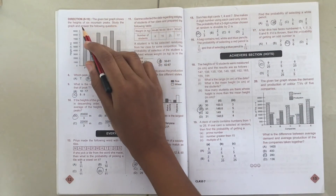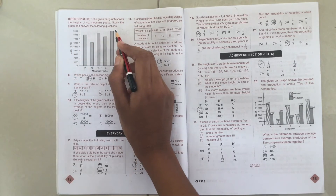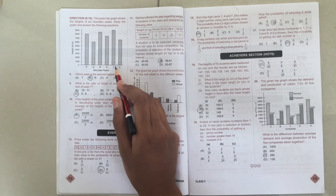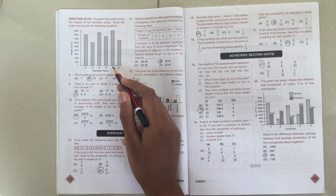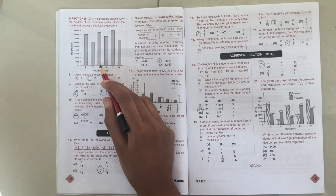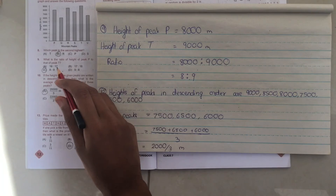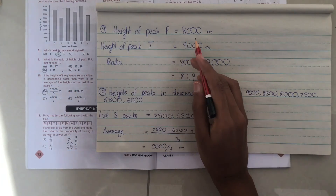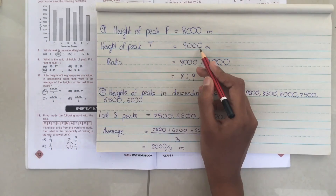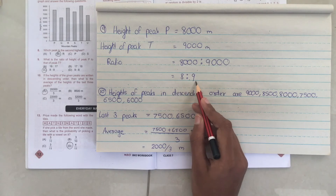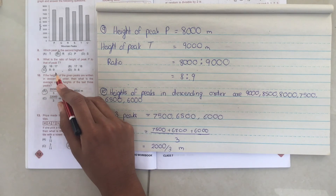Let us move on to the eighth question. The given bar graph shows the heights of 6 mountain peaks. Study the graph and answer the following questions. The eighth question asks which peak is the second highest. The ninth question asks: what is the ratio of the height of peak P to that of peak T? The height of peak P is 8,000 meters and the height of peak T is 9,000 meters. So the ratio is 8,000 : 9,000, which simplifies to 8 : 9, option C.